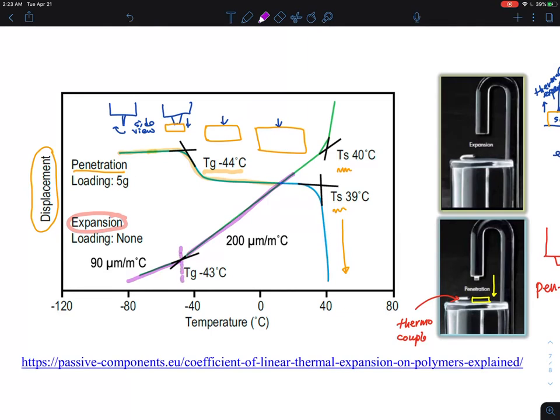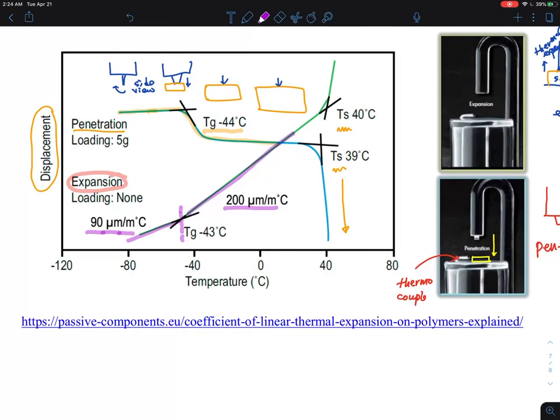This is where we call the Tg. If you look at the temperature below the Tg, it is moving 90 micrometer per meter thick sample per degree C, whereas this one is moving about 200 micrometer per meter. This is the value of CTE in the glassy state and the rubbery state.